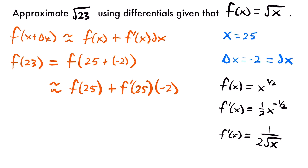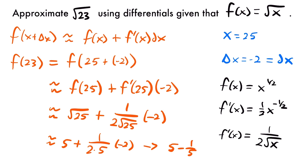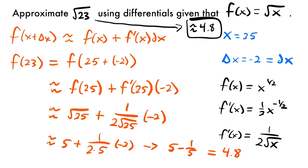Plugging in: this is approximately equal to the square root of 25 plus 1 divided by 2 times the square root of 25, times negative 2. That gives us 5 plus 1 over 2 times 5 times negative 2. The 2s cancel, leaving 5 minus 1 fifth, or 5 minus 0.2, so our approximation is 4.8. For comparison, the actual value of the square root of 23 from a calculator is about 4.7958, which rounds to 4.8 — showing how close our differential approximation is.